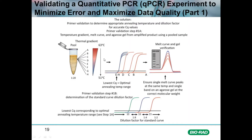The dilution factor for the standard curve can be determined from the thermal gradient. If at the optimal annealing temperature the amplification curves come up between 10 and 16 cycles, dilute the pooled cDNA by 1 in 8 in series. If the curves come up between 16 and 23 cycles, use a 1 in 4 serial dilution. And if the amplification curves come up above 23 cycles, use a 1 in 2 serial dilution series with the pooled cDNA sample.